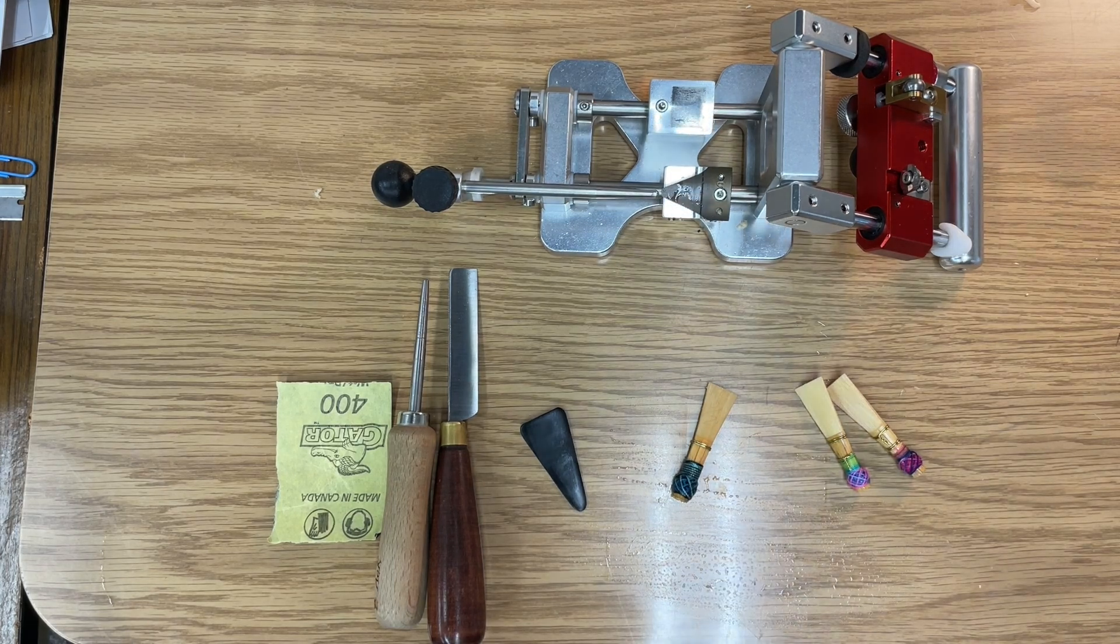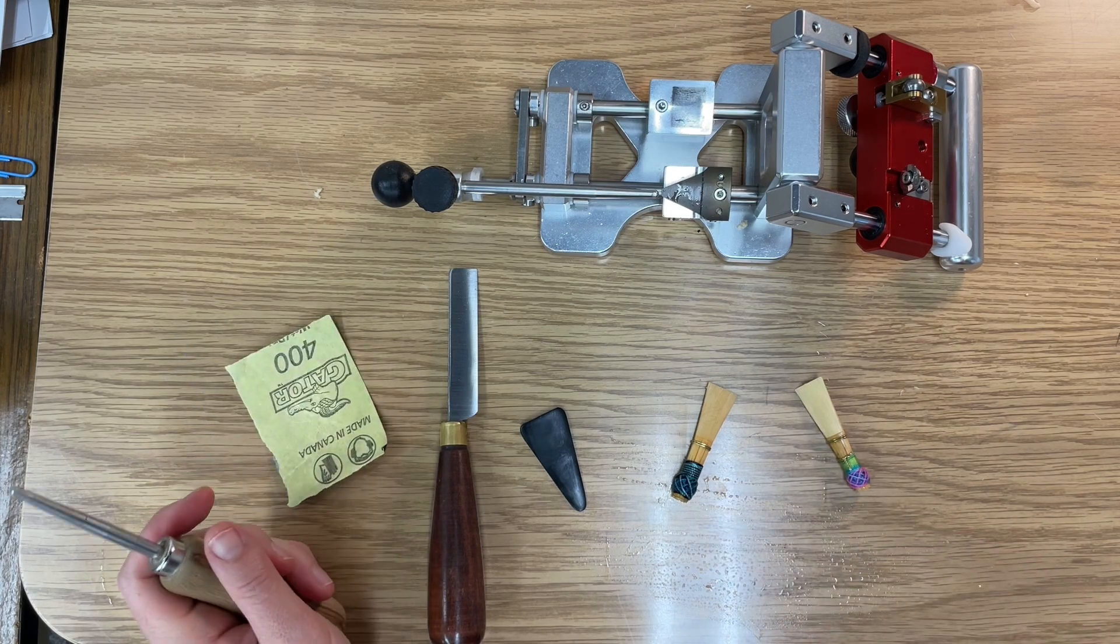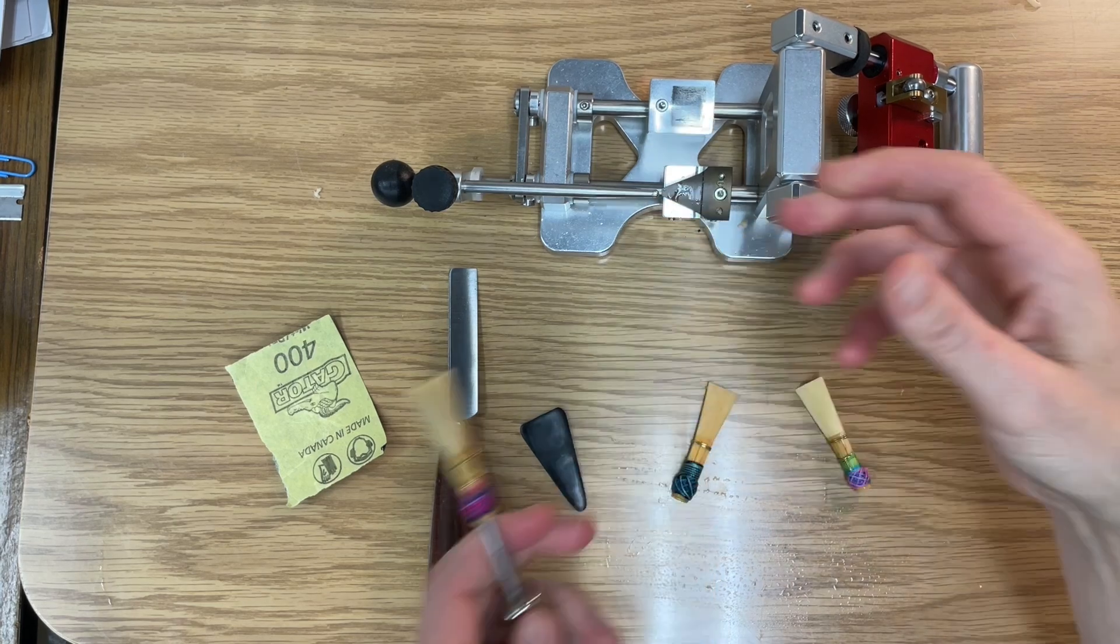So once you've done the tip profiler, you can crow the reeds right away. They'll usually make a pretty decent crow, but the surface is still pretty rough and it's not very blended.